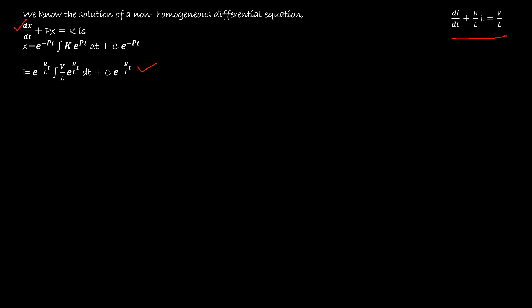This equation can be further simplified. Keep C·e^(-R/L·t) as the first term. For the second term, keep e^(-R/L·t) as it is, and since V/L is a constant, take it outside the integral. Inside the integral remains e^(R/L·t). Using the formula that the integral of e^(xt) is e^(xt)/x, we get the simplified expression. After integration, L cancels, leaving V/R. So the expression is: I = C·e^(-R/L·t) + V/R. However, C still needs to be determined.